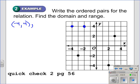This point, to the left two, or negative two, and up four. So that would be x-value negative two, y-value four.